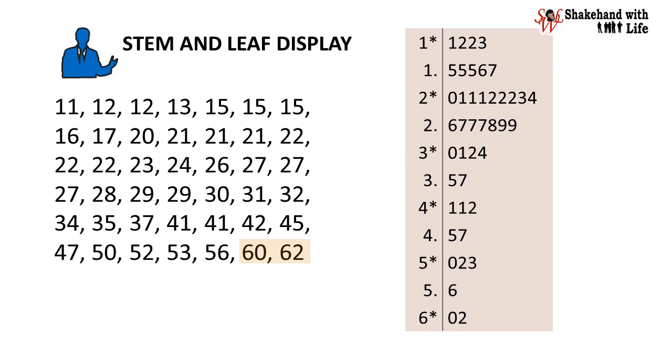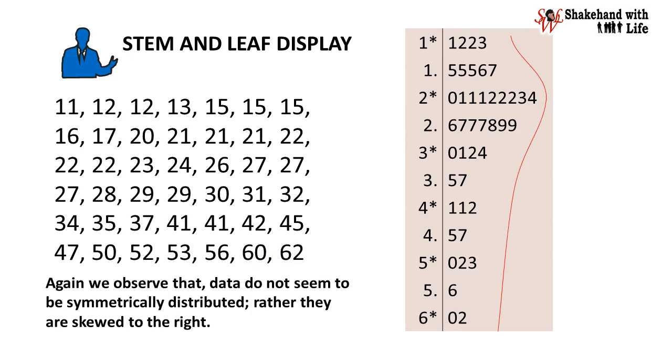Again, we observe that data do not seem to be symmetrically distributed, rather they are skewed to the right. I hope now you are clear how to use stem and leaf for quick statistical data analysis.